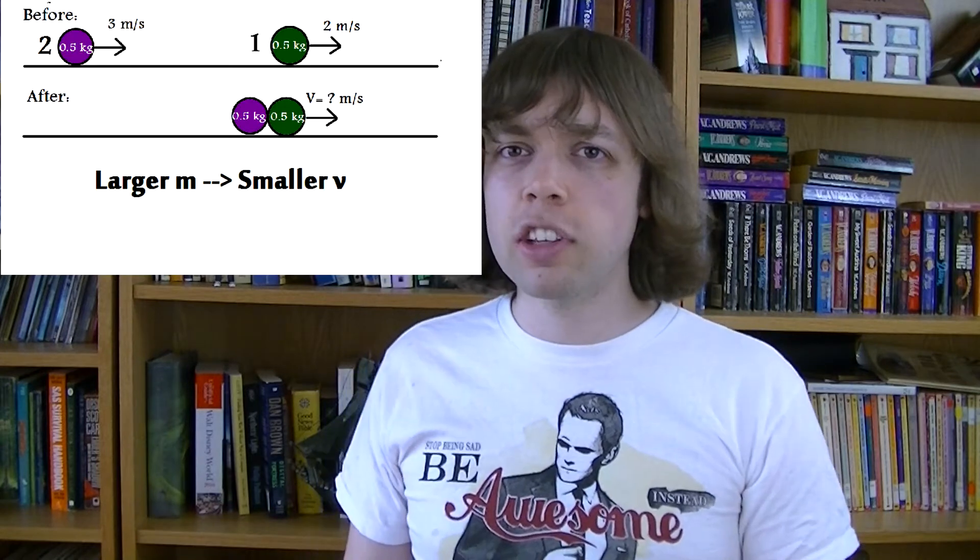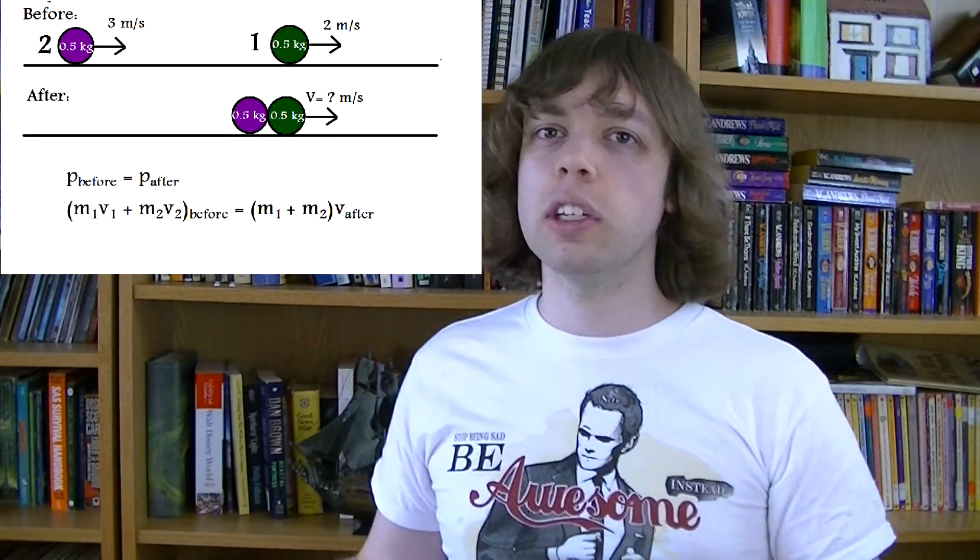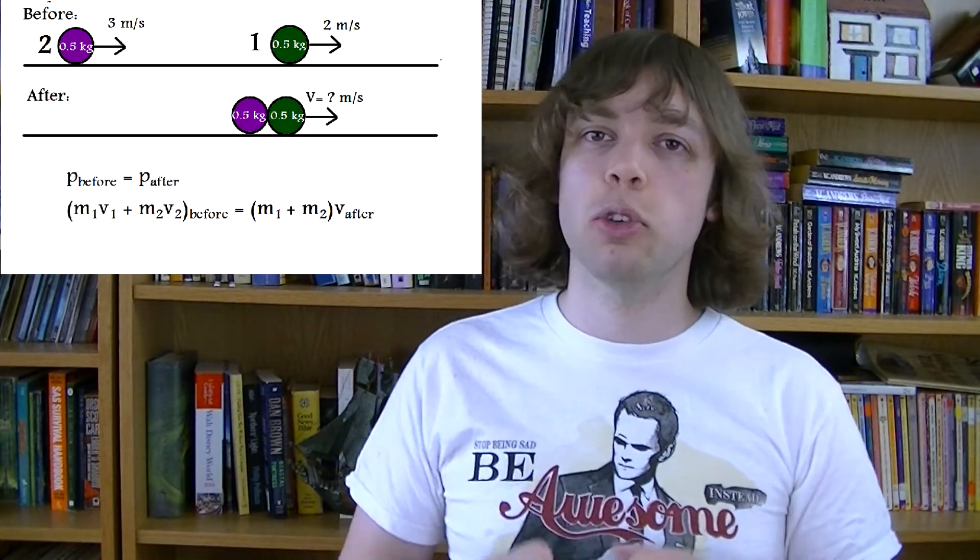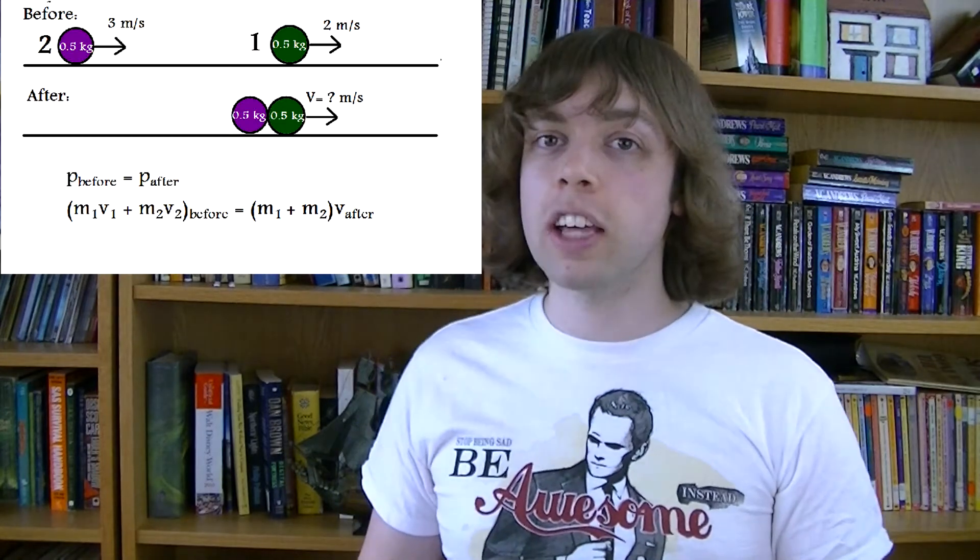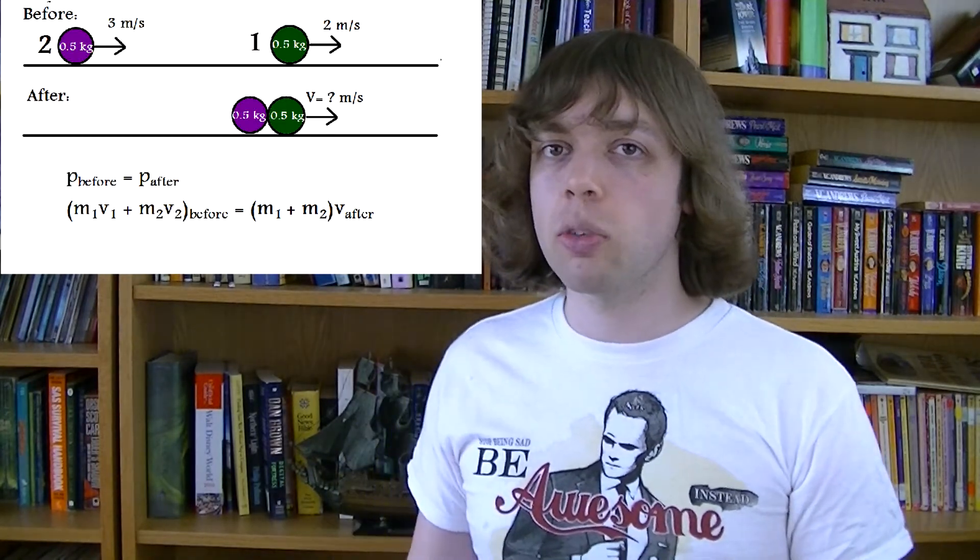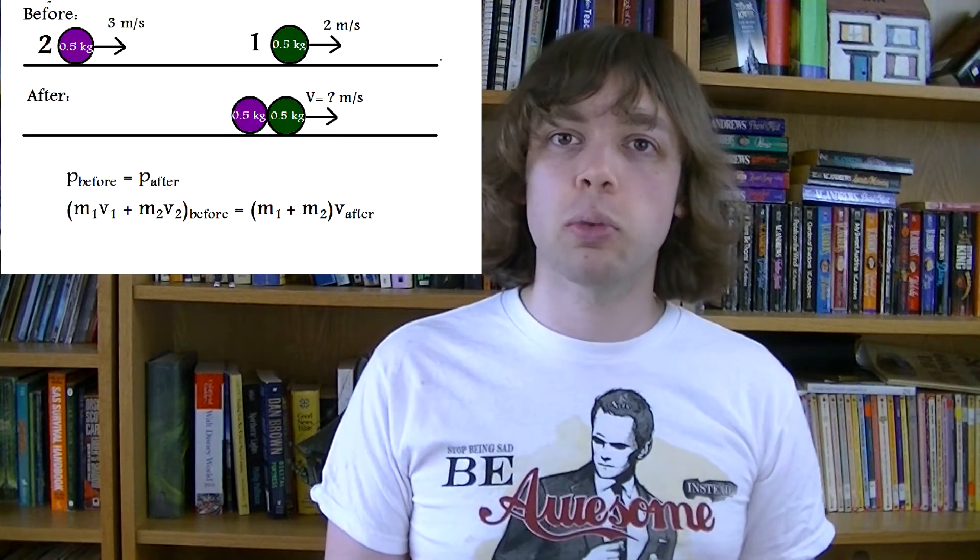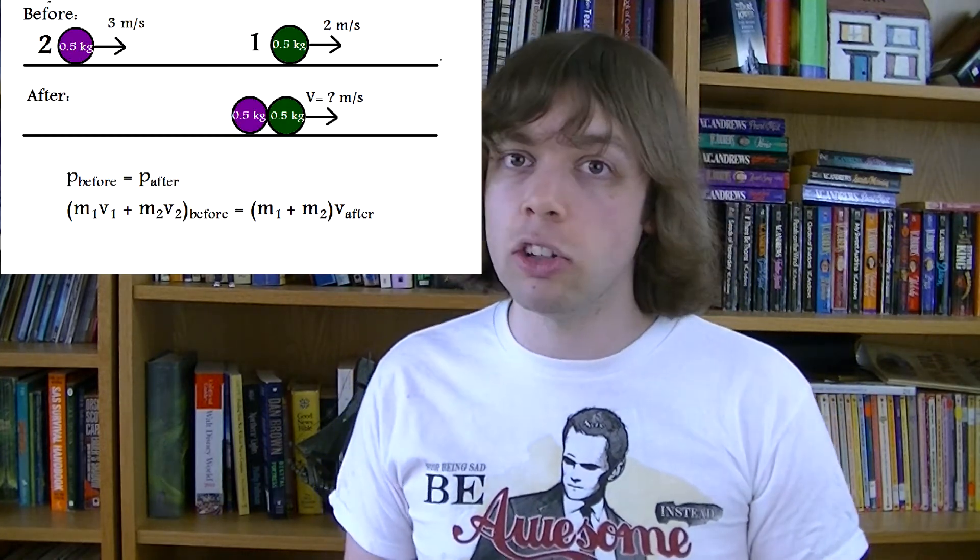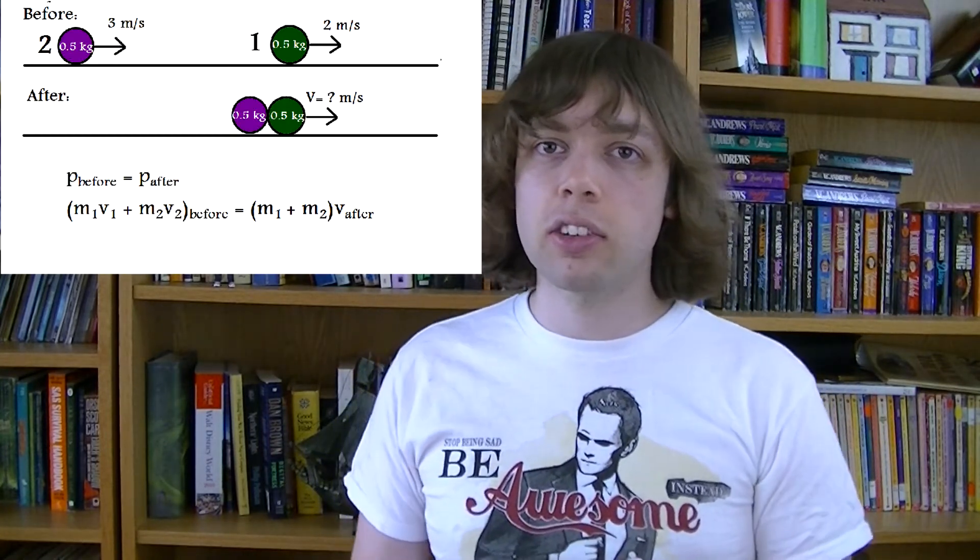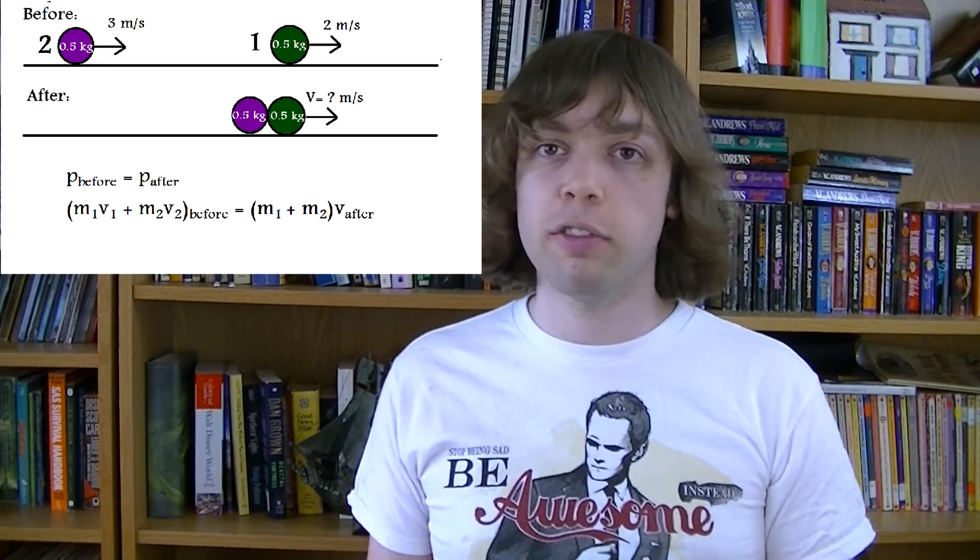If we were writing an equation for this collision, it would look like this. When two things stick together in a collision, we can treat them as one object. So, we're going to add the masses together. So we now have one object with a mass of 1 kilogram, instead of two objects with masses of 0.5 kilograms each. And again, you could plug some numbers in and solve in exactly the same way, depending on what information you were given.